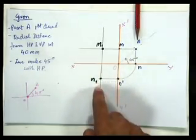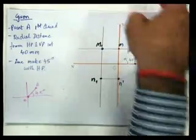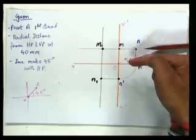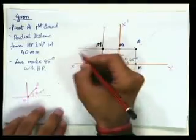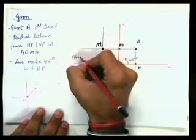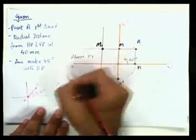And when I am looking like this, it is the front view which is there. So M will be projected here. So this is above line XY and this is below XY. And this is my front view and this is my top view.